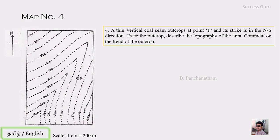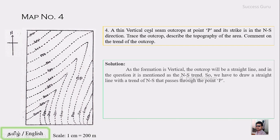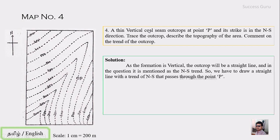As mentioned, this is a vertical formation. If the formation is vertical, the outcrop should be a straight line. It is mentioned as having a north-south trend, so the outcrop we have to trace should also trend north-south. The outcrop is indicated at point P, so our outcrop line should be crossing through this point.